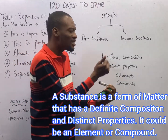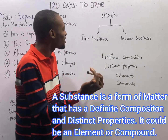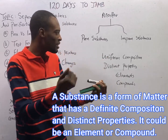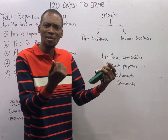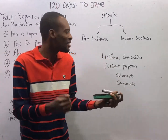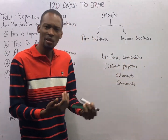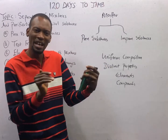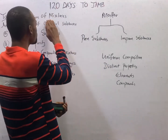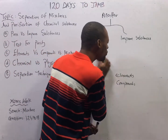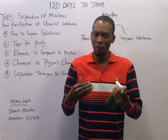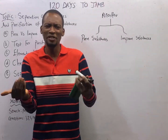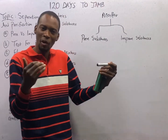Elements is a form of matter or a substance that contains only one type of atom. Only one type of atom makes up elements. And when two or more elements combine chemically, they form compounds. Meanwhile, when two or more elements, or elements and compounds, or compounds and compounds come together physically, they form what we refer to as mischiefs. In mischiefs, each of the components retains their own properties. While for compounds, the property of the compound is different from the property of the elements that make it up.